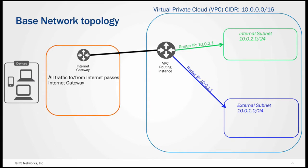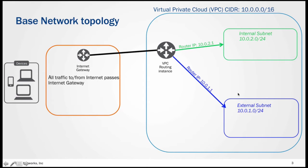What this base network topology is about is the Virtual Private Cloud itself. As soon as you create a Virtual Private Cloud, it's a CIDR block of 10.0.0.0/16. This is the CIDR block I will use now. And as soon as you create this, the system will automatically create a routing instance that will be responsible for all the routing within this CIDR block. Later on we will add two subnets — one meant for internal and one meant for external.